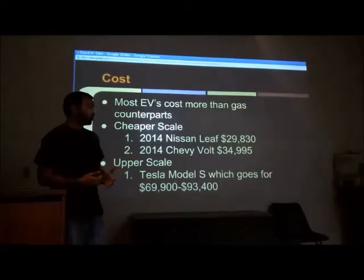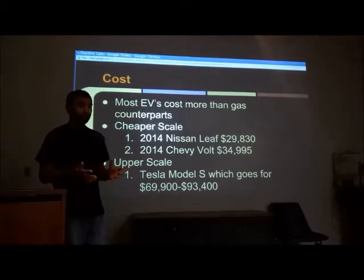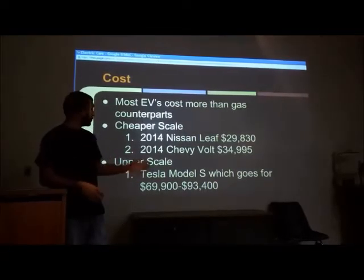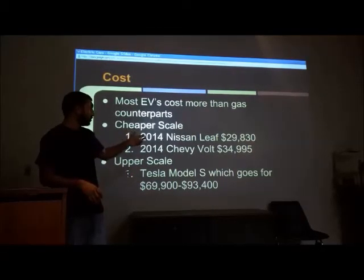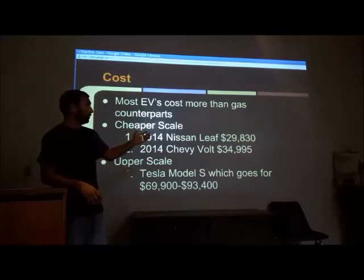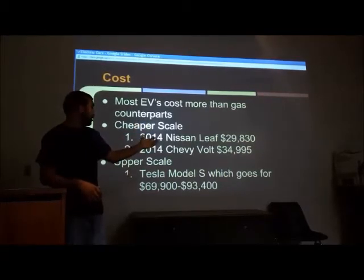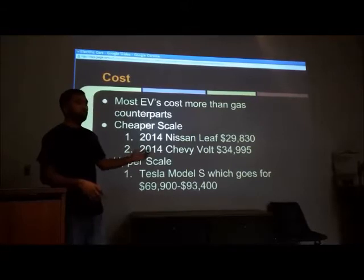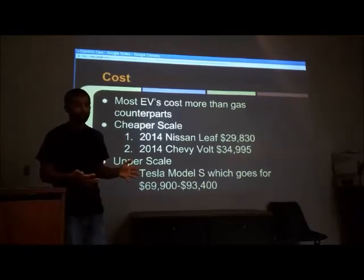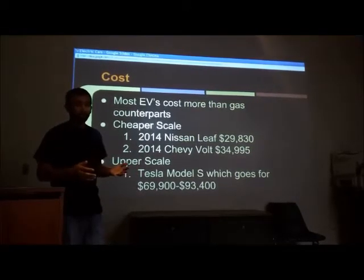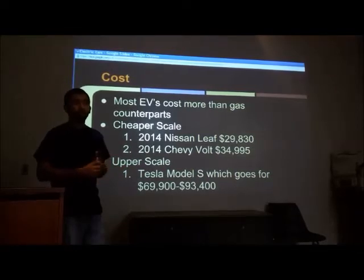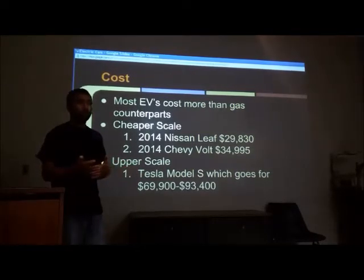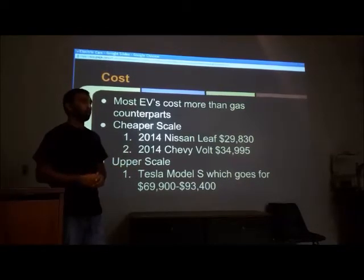For the actual cost, these cars with all these inconveniences are still very expensive. For example, a 2014 Nissan Leaf and a Chevy Bolt run $30,000 and $35,000 respectively. The upper-scale Tesla model is between $70,000 and $93,000. By contrast, you can get a simple gas-powered vehicle from Honda or Kia in the low to mid $20,000s without the inconveniences that come with an electric car.